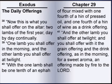Now this is what you shall offer on the altar: two lambs of the first year, day by day, continually. One lamb you shall offer in the morning, and the other lamb you shall offer at twilight. With the one lamb shall be one-tenth of an ephah of flour, mixed with one-fourth of a hin of pressed oil, and one-fourth of a hin of wine, as a drink offering. And the other lamb you shall offer at twilight, and you shall offer with it the grain offering and the drink offering, as in the morning, for a sweet aroma, an offering made by fire to the Lord.